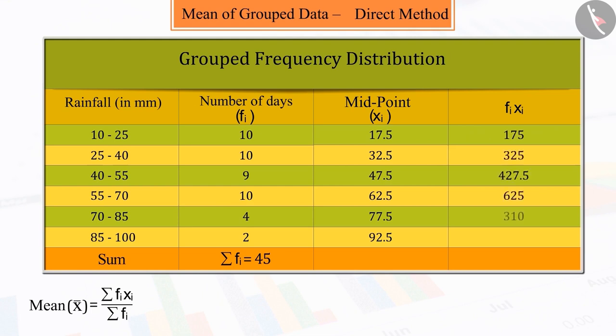Find the sum, that is 2047.50, and divide it by the sum of their frequencies, that is 45. On solving this, you get 45.50.